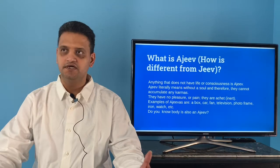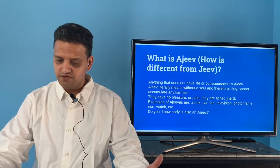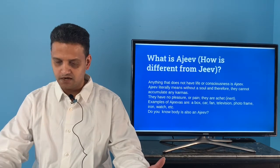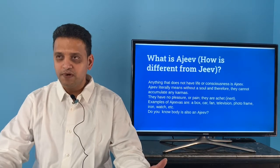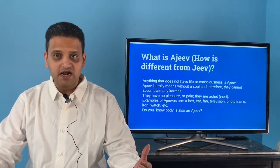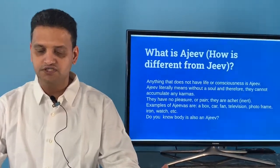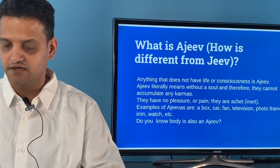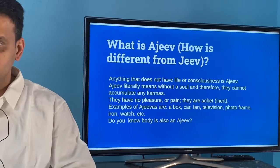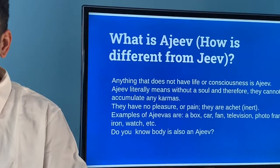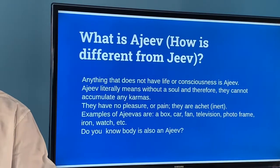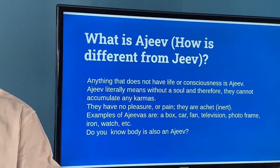Anything that does not have life or consciousness is called Ajiv. Ajiv literally means without a soul, and therefore they cannot accumulate any karmas. So they have no pleasure, no pain. Examples of Ajiv are all around us — a box, a car, a table, a chair — most of the things surrounding us we can consider Ajiv.